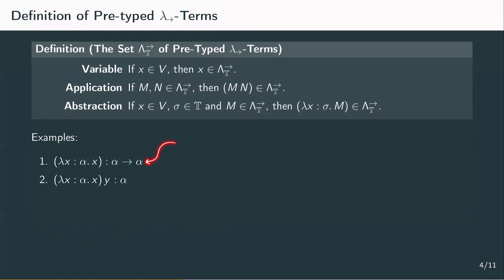Properly typeable lambda terms will be called legal terms. We're going to introduce rules to check whether a pre-typed term is legal. Before we do that, let's take a look at our last example: lambda x of type alpha dot y applied to x. Here we have a free variable whose type is unknown. This term takes an element of type alpha, and we don't really know what the type of y applied to x is. We can guess and just give the result of y applied to x any type sigma, so the whole term would have the type alpha to sigma.